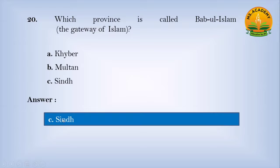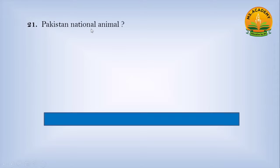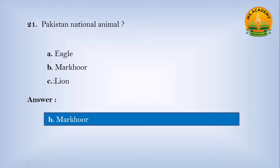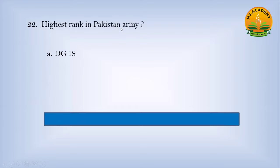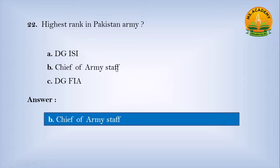National animal of Pakistan: option A Eagle, option B Markhor, option C Lion — answer is B, Markhor. Highest rank in Pakistan Army: option A DG ISI, option B Chief of Army Staff, option C DG FIA — answer is B, Chief of Army Staff.